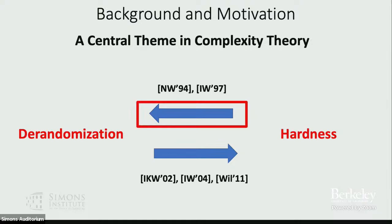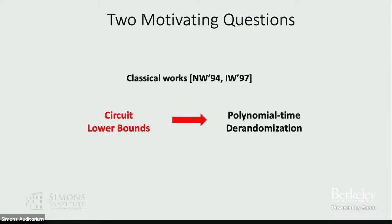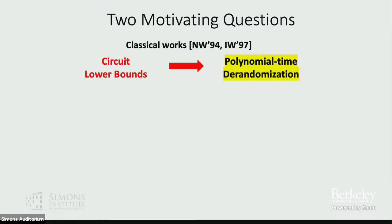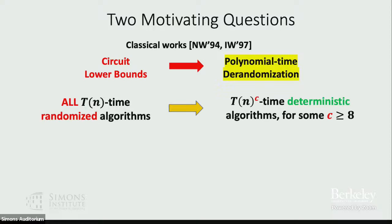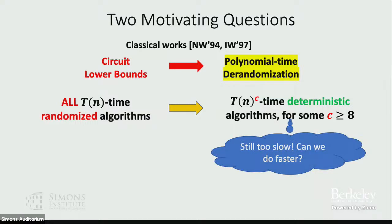Today I'm going to focus on the first connection: hardness implies de-randomization. The classical works show that assuming strong enough circuit lower bounds, you can get polynomial time de-randomization. Most of my work is motivated by two fundamental questions about these classical results. First, look at the consequence: it says all T(n)-time randomized algorithms can be converted into T(n)^C-time deterministic algorithms for some large constant C. This de-randomization is fine for answering BPP equals P, but it's not enough for practical applications because it's still too slow.